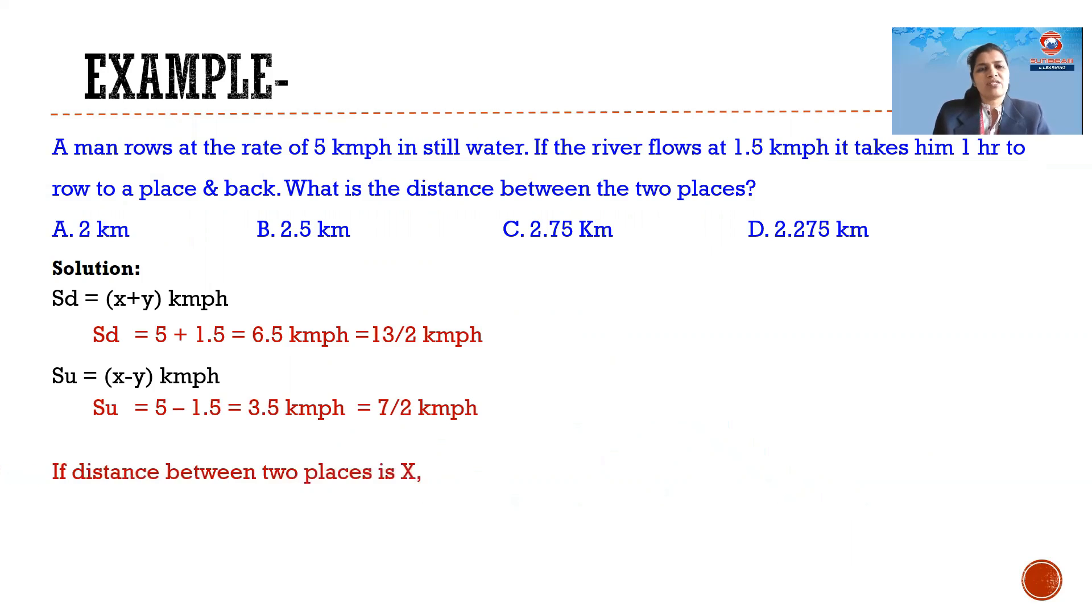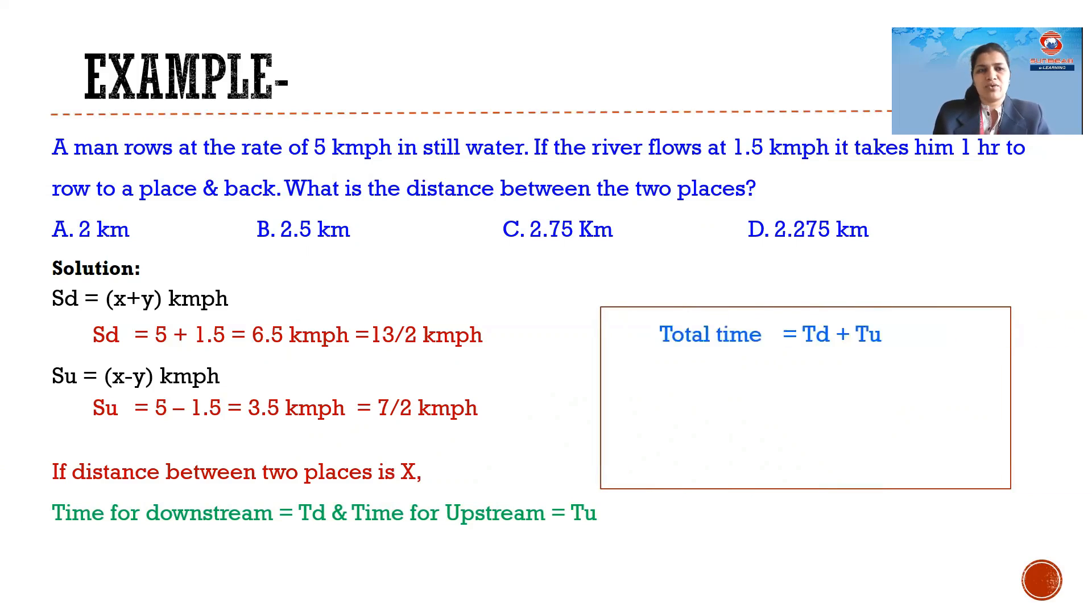So let us assume that the distance between the two places is denoted as x. Time for downstream is TD and time for upstream is TU. So can I say the total time needed to go upstream and downstream is equal to TD plus TU. Now can I write the time in terms of distance upon speed? So now substituting the values we get the output as the distance between the two places is equal to 2.275, that is answer option D.